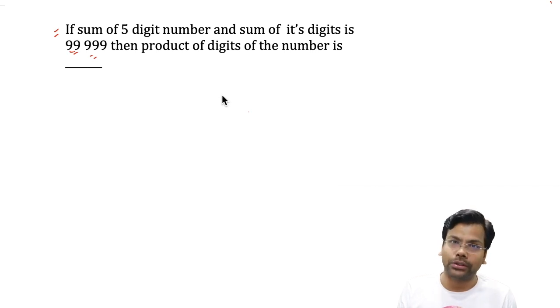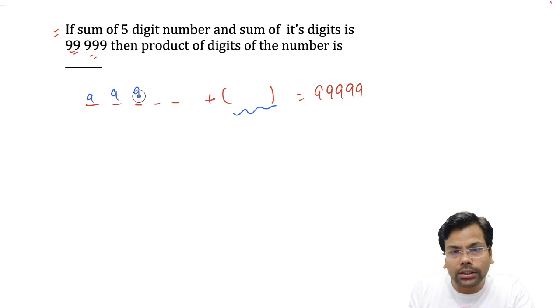I hope you have paused. So you must remember one thing: if you have a five digit number and the summation of its digits is given 99999, what should be the maximum sum of the digits? Assume all the numbers are 9, so the maximum summation is 45.